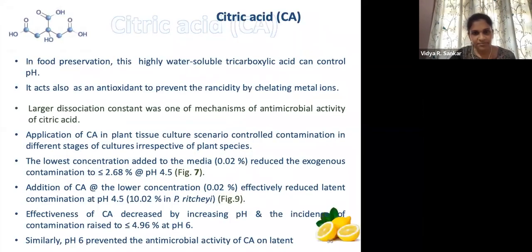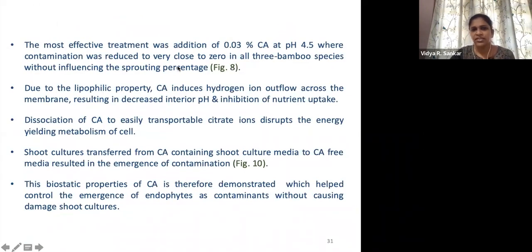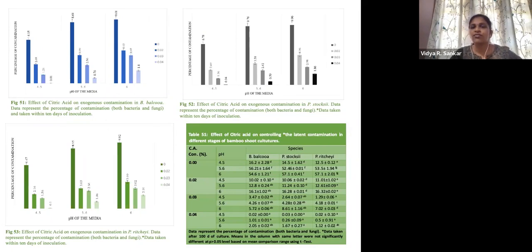Citric acid is one of the naturally occurring organic acids. We get very good contamination control at pH 4.5. A percentage of 0.02% is required for controlling exogenous as well as endogenous contamination. When enhancing the pH to the standard level of 5.6 or 6, the effectiveness of citric acid is reduced and it shows no influence on exogenous or endophytic contamination at the higher pH level.